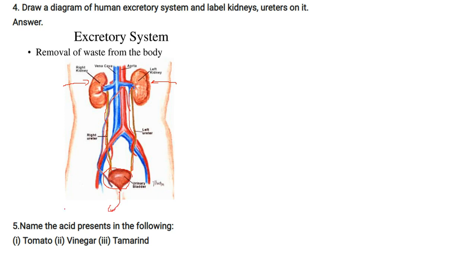Name the acid present in the following: tomato has oxalic acid, vinegar has citric acid, and tamarind has tartaric acid.